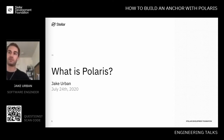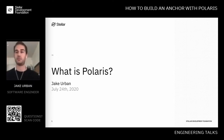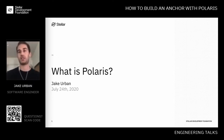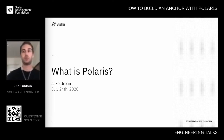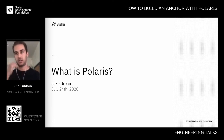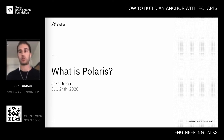Welcome. This is a talk about Polaris, which is a Django application and framework that allows you to build anchor servers according to the standards we define called Stellar Ecosystem Proposals, or SEPs. Django Polaris is a tool we build so that anchors can get their anchor service up quickly and with less work required.